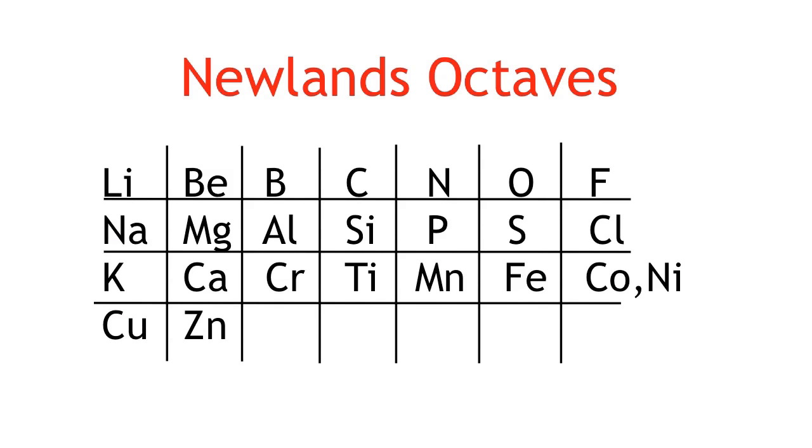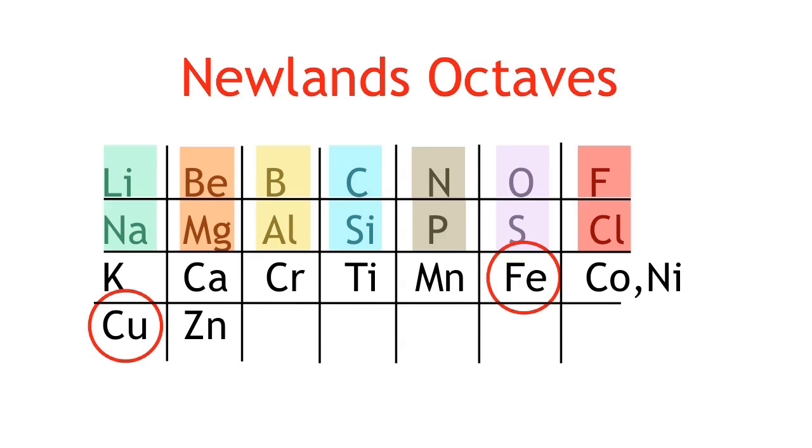His pattern only worked up to a certain point. It broke down on the third row, with the transition metals like iron, copper and zinc causing a massive flaw in his theory.